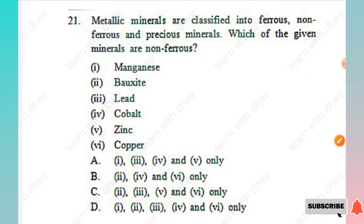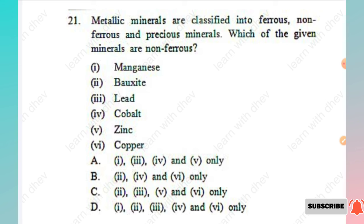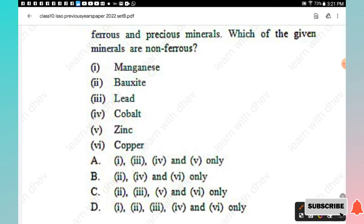Question 21: Metallic minerals are classified into ferrous, non-ferrous, and precious minerals. Which of the given minerals are non-ferrous? Options include manganese, bauxite, lead, cobalt, zinc, copper. Bauxite, lead, zinc, and copper are non-ferrous, so Option C is the right answer.